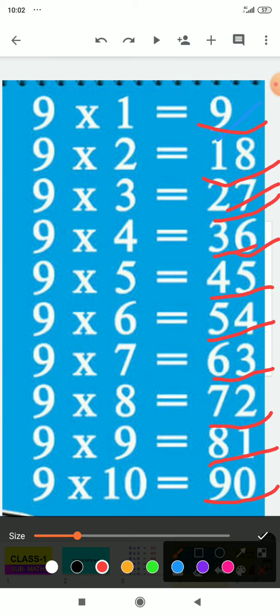9 times 4 is 36, 9 times 5 is 45, 9 times 6 is 54.